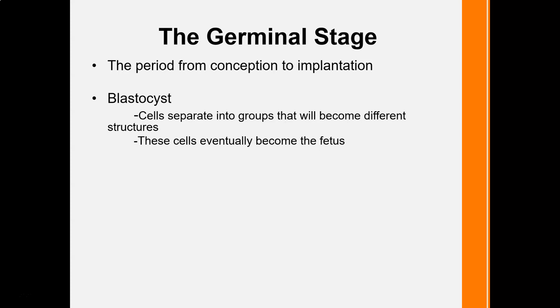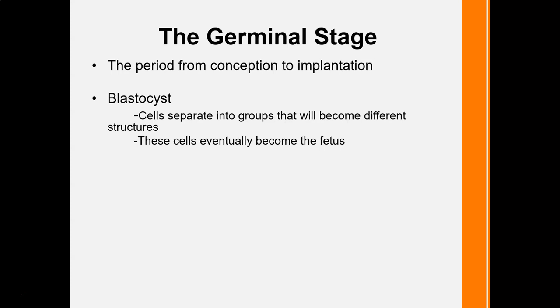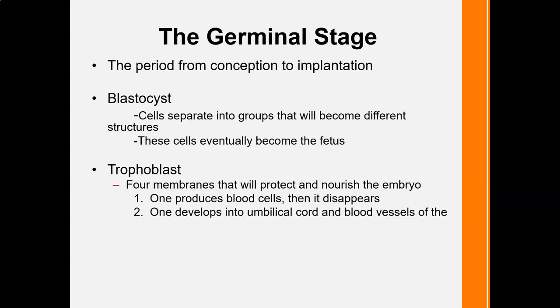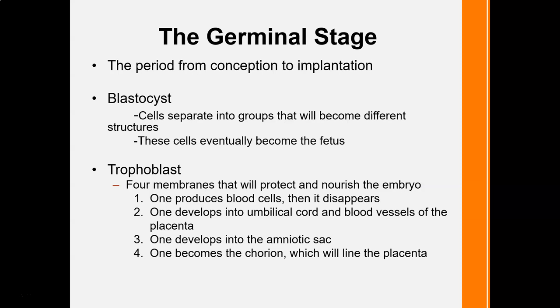Entering the embryonic stage, blastocysts become the group of cells that will ultimately become the fetus. The trophoblasts are the outer membranes that become nourishment and support for the growing fetus: one produces blood cells, one develops into the umbilical cord and blood vessels of the placenta, one develops into the amniotic sac, and one becomes the chorion which will bind the placenta.